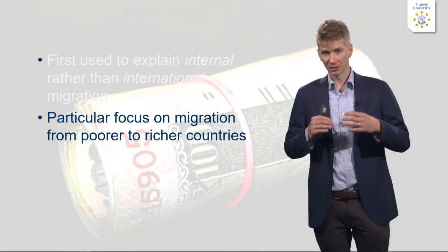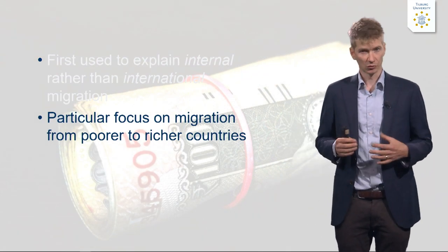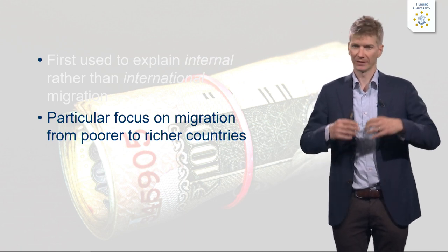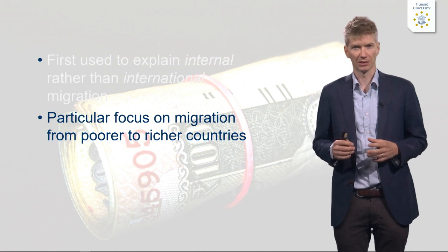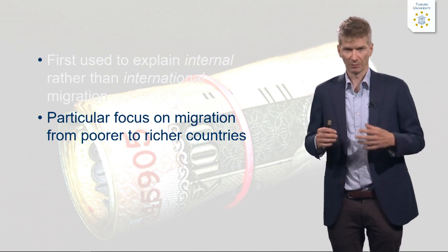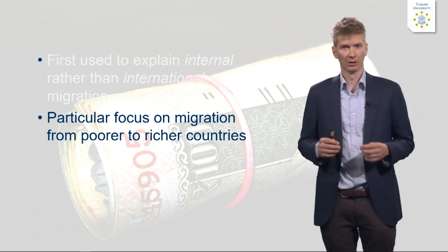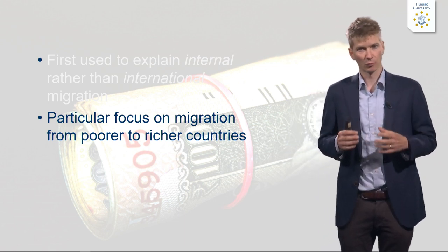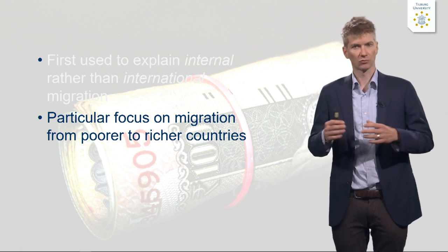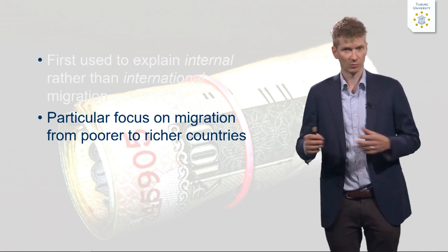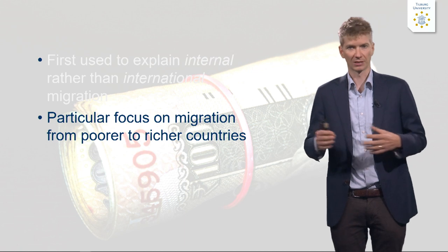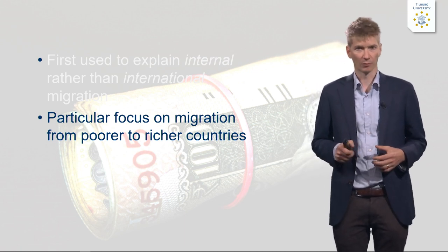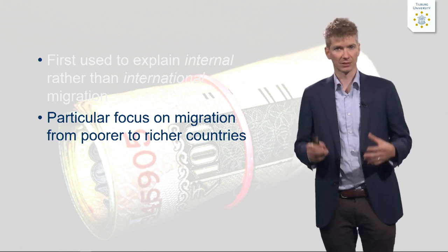They have a particular focus — and that is important to keep in mind — on economic migration, on labour migration. So this theory cannot really be used to explain why people move when there is a war, for example. It is focused on economic migration, and there is a particular focus also on migration from poorer countries to richer countries, rather than between countries that are equal in terms of economic development.